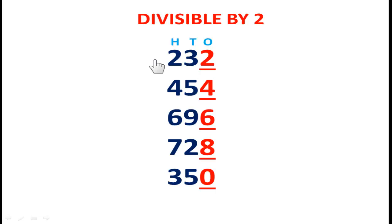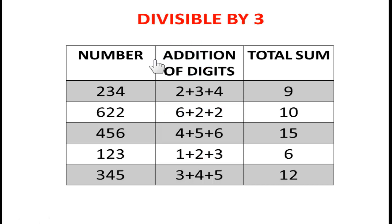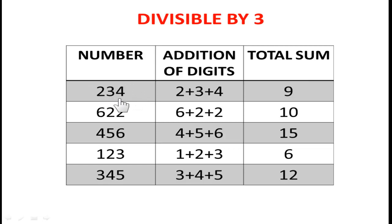Now we are moving to divisibility by three. Take any number — is it divisible by 3 or not? Take the number 234 and add its digits: 2 plus 3 plus 4 equals 9. If 9 is divisible by 3, then the total number is divisible by 3. So in 234, the sum of the three digits equals 9.